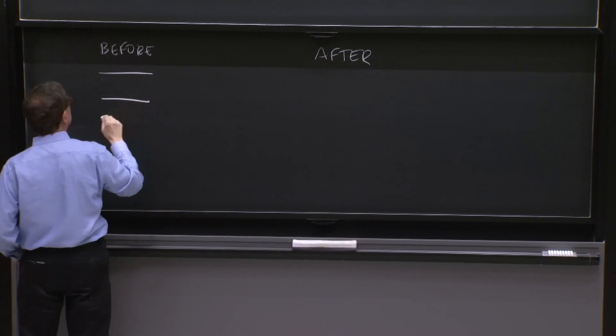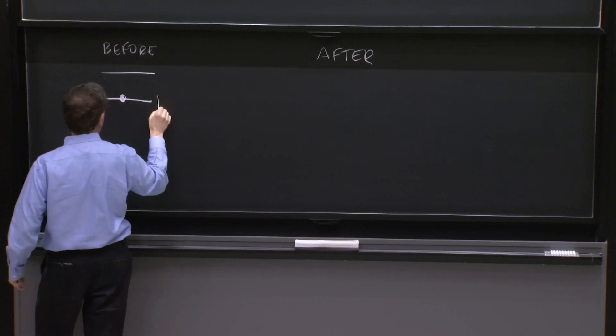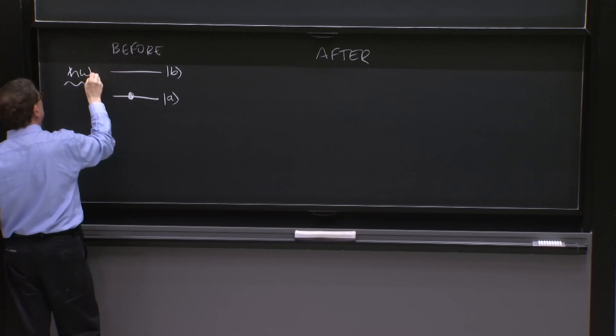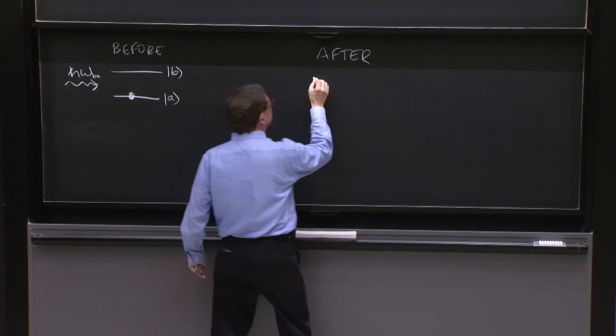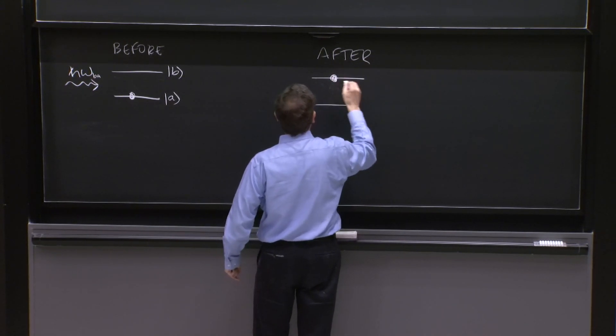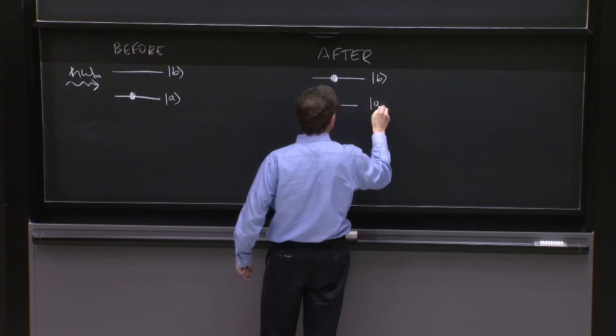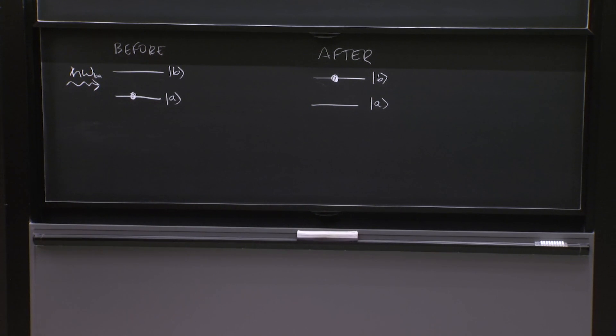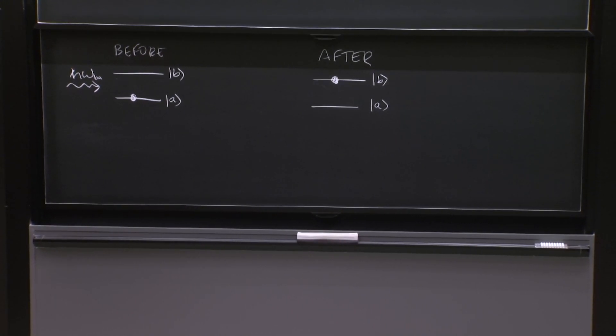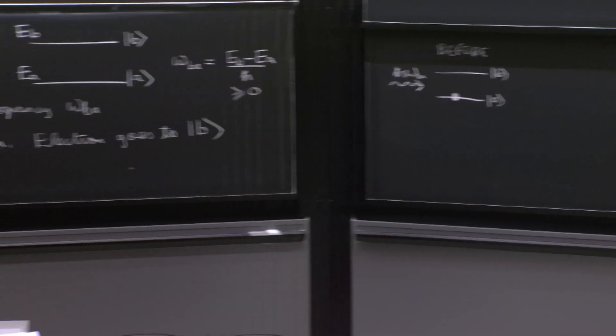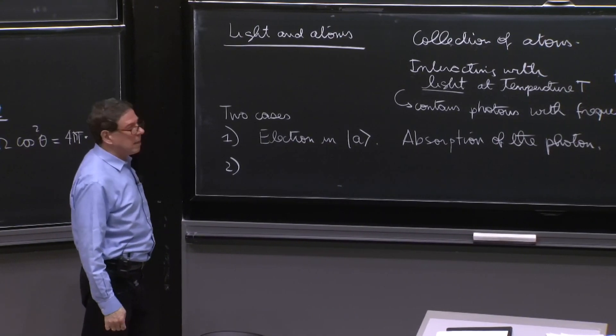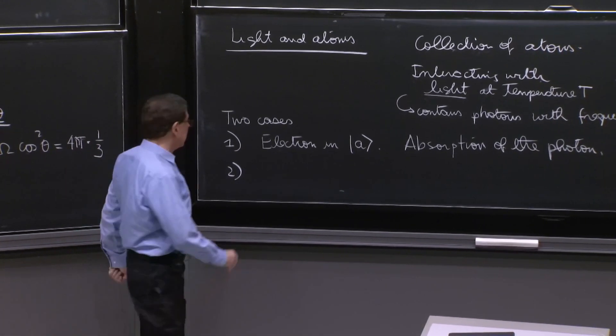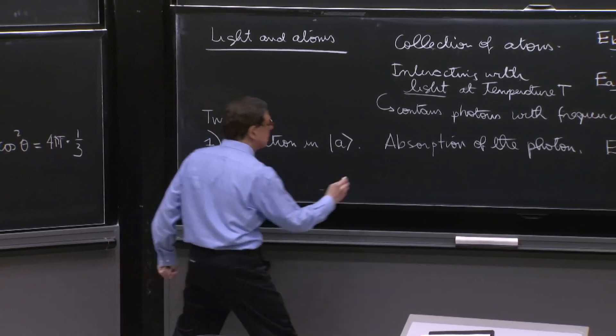And the electron goes to state B. So we'll draw it here. So this is, yeah, before and here is after. So before, you had this thing. And the electron was on state A. And there was a photon coming in here with energy h-bar omega BA. And then after the electron is being pushed up, and there's no photon anymore. The photon was absorbed. That's physically what we would expect. That's absorption.